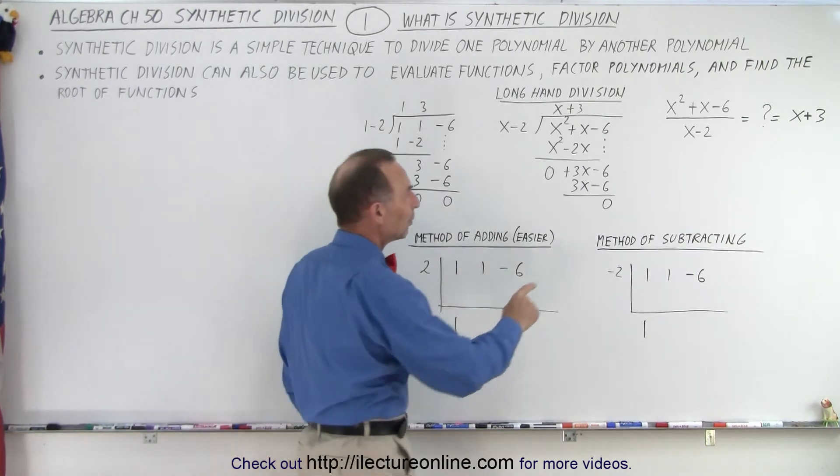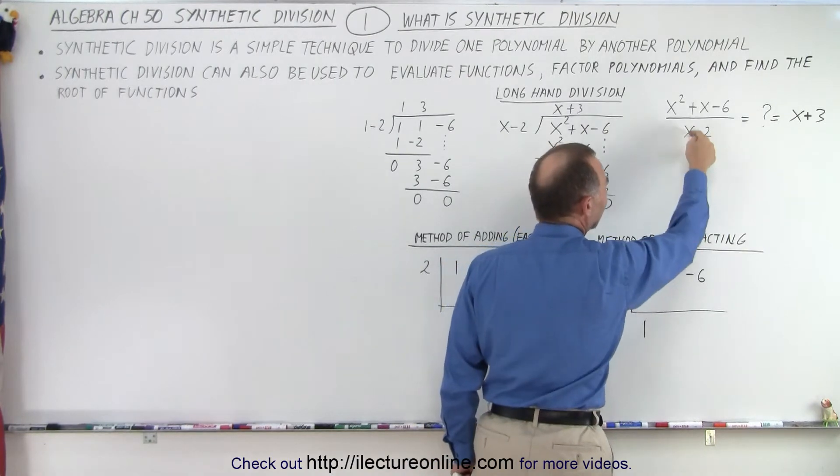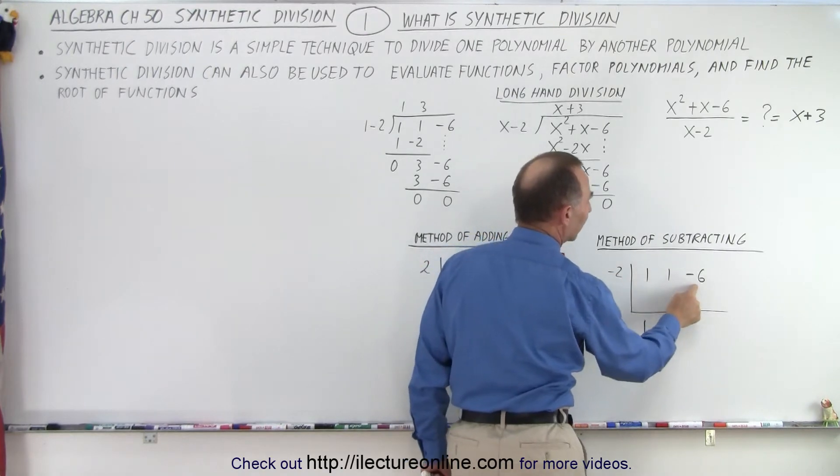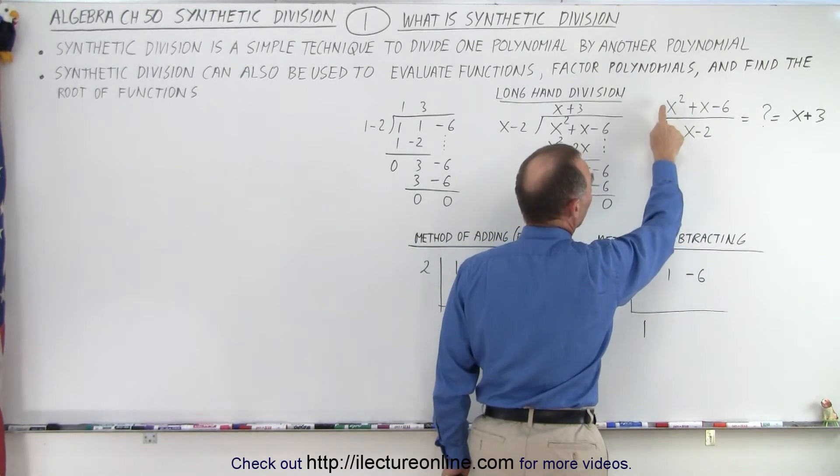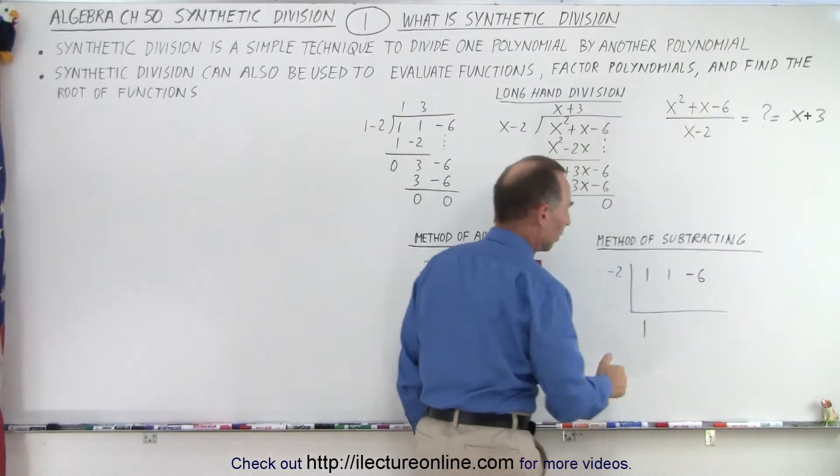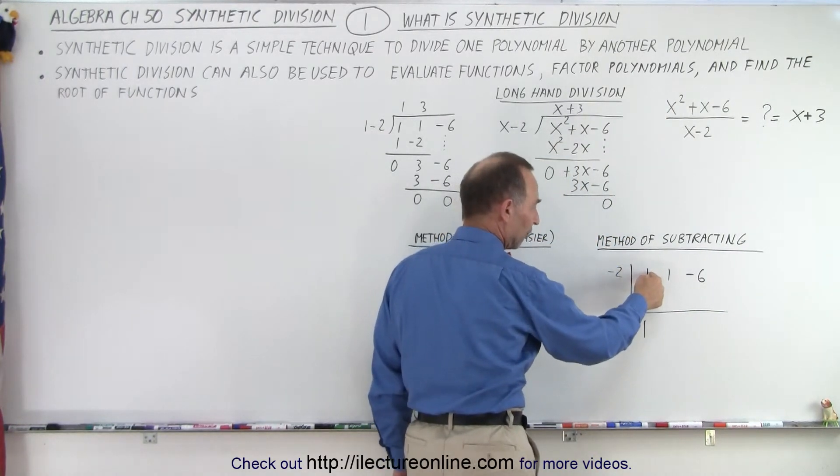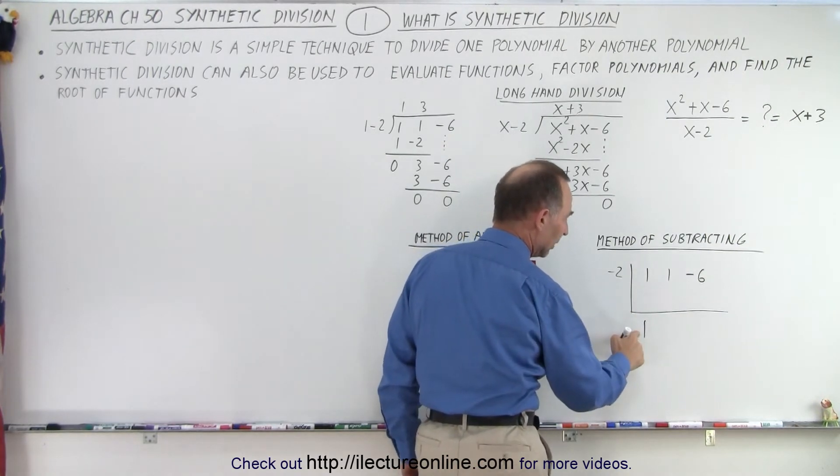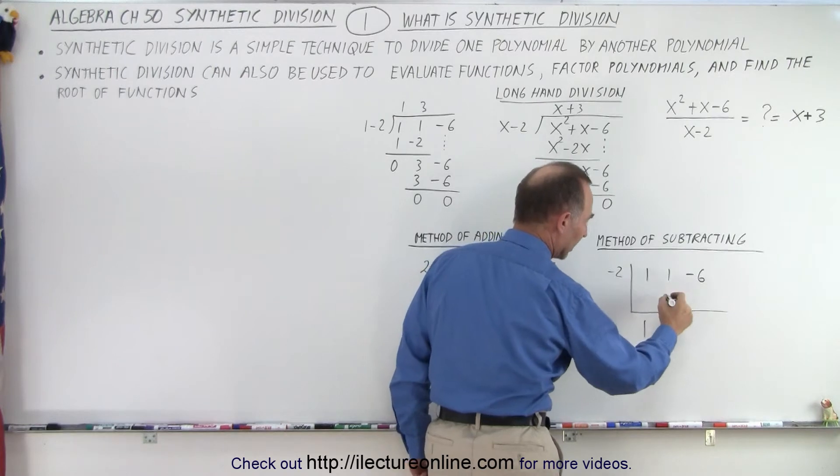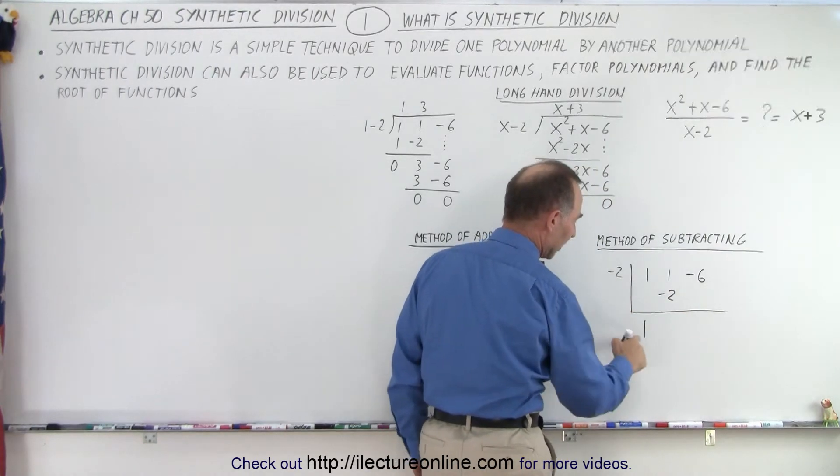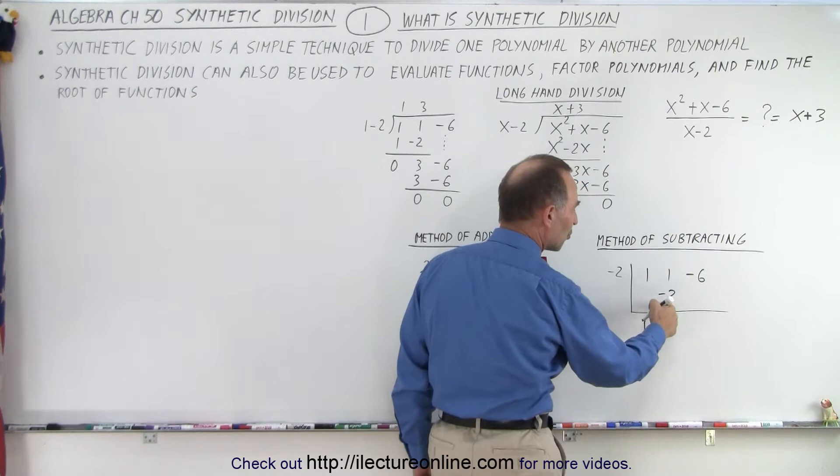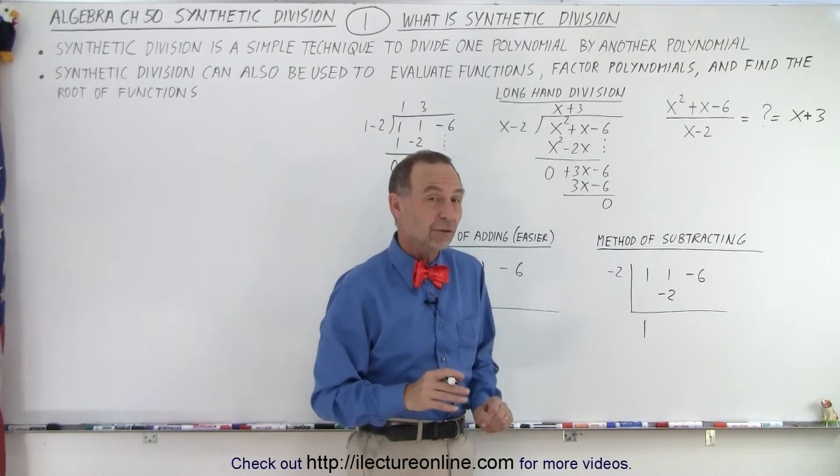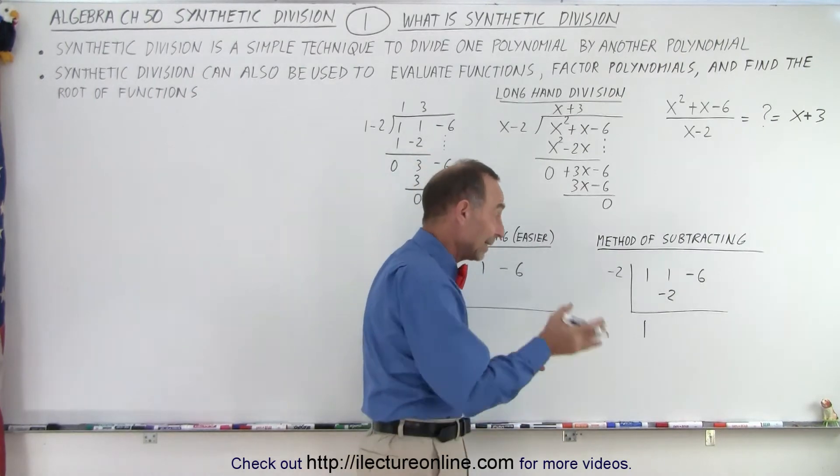So notice, here we have divide by x minus 2. So we take the minus 2 and we put that right here. The coefficients 1, 1, and negative 6 are the coefficients of the polynomial in the numerator. So the way this works is you take the first coefficient and you drop it down here. Then you take minus 2 times 1, which is minus 2, and you write it here. So this is simply minus 2 times 1. And now we subtract the negative 2 from the 1. Remember, when we subtract the negative number, it's like adding the positive number.